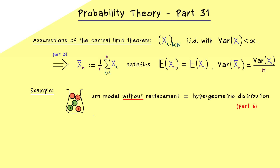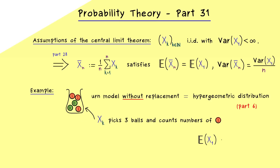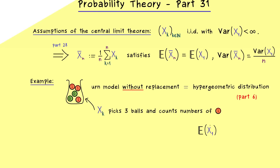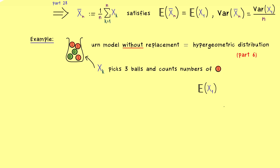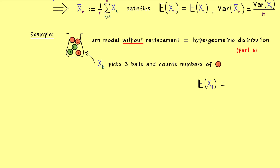Let's keep it simple for this example. Let's say we have five balls and we pick three. So each random variable xk we consider here is described by this: we pick three balls and count the number of ones. If you know the hypergeometric distribution, you might know how to calculate the expectation. I will skip the calculation and just tell you it should be 9 over 5, or by using decimal numbers, 1.8.